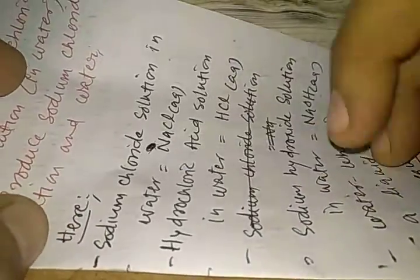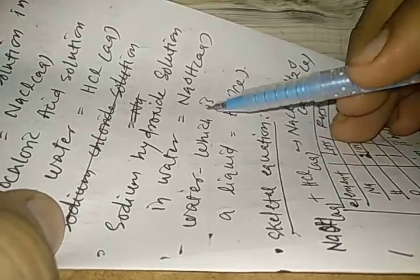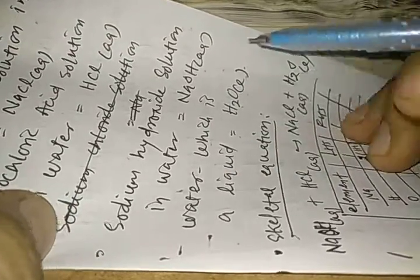Here we can see that sodium chloride solution in water is NaCl aqueous, hydrochloric acid solution in water is HCl aqueous, sodium hydroxide solution in water is NaOH aqueous, and water is in liquid state so H2O liquid.